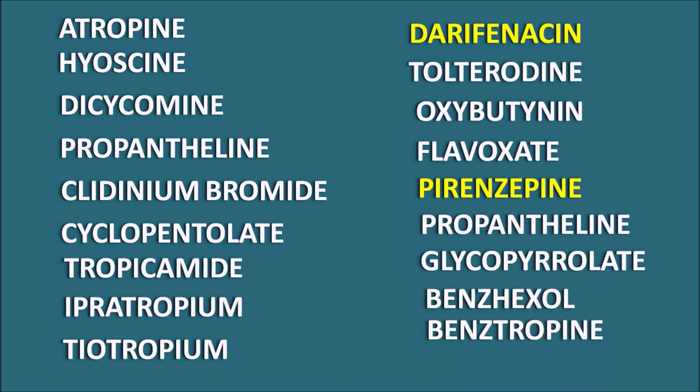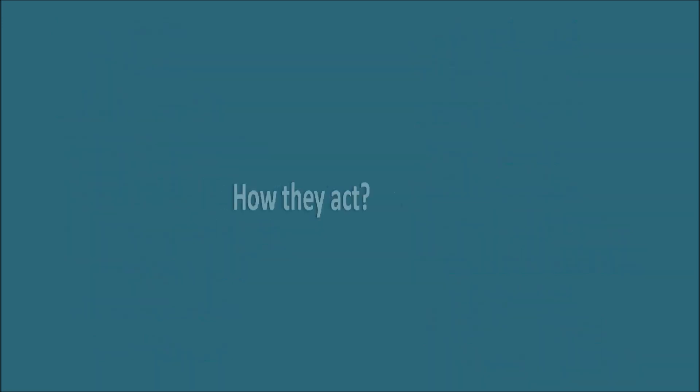Benzhexol and benzotropine are acting as anti-parkinsonian agents, and orphenadrine is centrally acting to decrease muscle pain. In our previous video we already discussed all these anticholinergic drugs, and today let us discuss how they are going to act — their pharmacological actions.